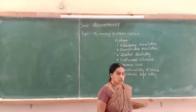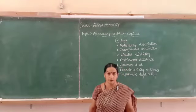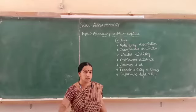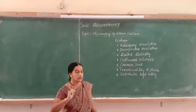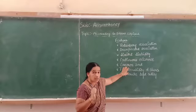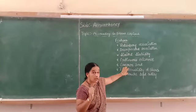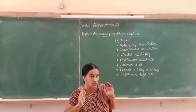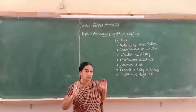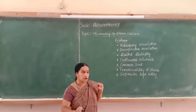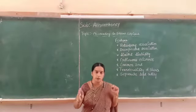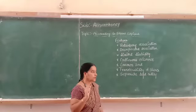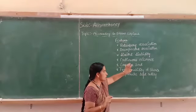Next is the common seal. Each and every document of a company has to be signed, but the company is not having any hands to sign. So the tool for that is the common seal. The name of the company will be engraved on the common seal and that seal will be used for each and every document. If there is no common seal, the document will not be valid. One authority will be given to a person and he will sign the document after attaching the common seal.